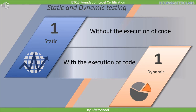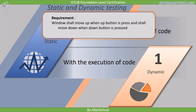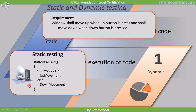Let's try to illustrate this with an example. Let us say that we have a customer requirement that states the window shall move up when the up button is pressed, and shall move down when the down button is pressed. To fulfill this requirement you have to write a code for it. Suppose a developer has written this particular code — a function implementing the customer's requirement: when button is pressed, if button up then move up, otherwise move down.